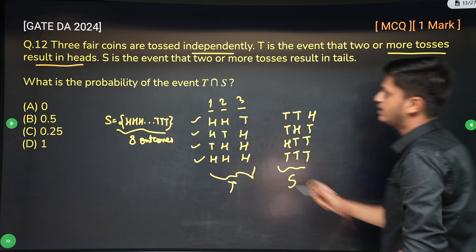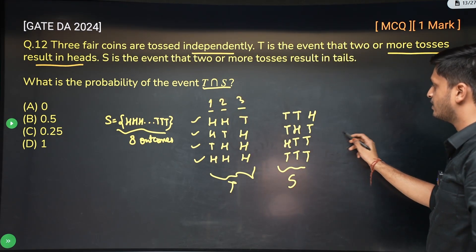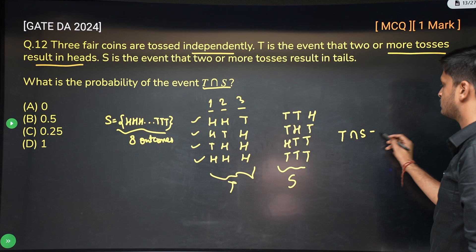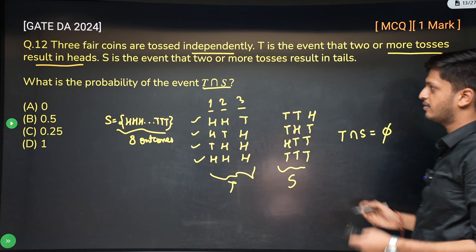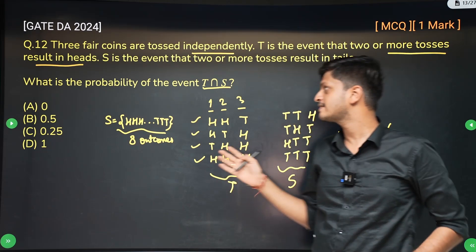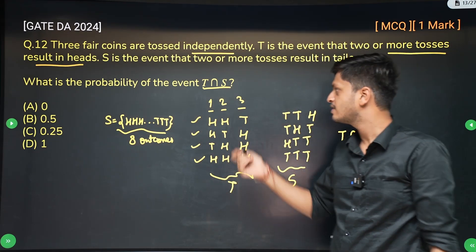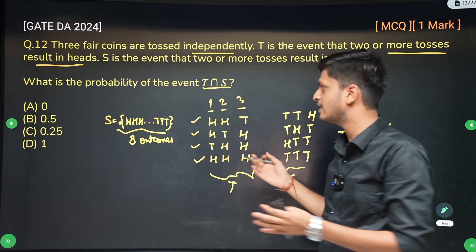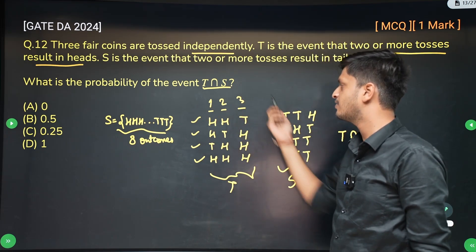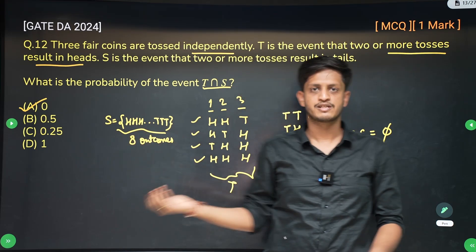So what is the probability of the event T intersection S? So T and S have nothing in common, right? So T intersection S is phi. T and S have nothing in common. Why? Because T is saying that you should have at least two heads. S is saying that you should have at least two tails. You cannot have both because there are only three coins. So T intersection S is phi, it is an empty set. So the probability of T intersection S will be zero. It is zero upon eight, which is zero.